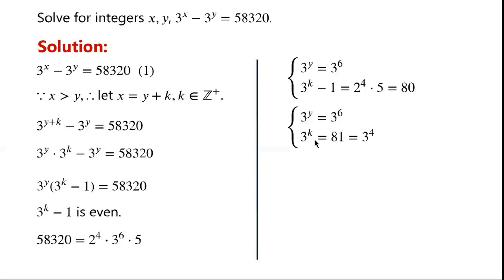So 3 to the power of k equals 81, which can be written as 3 to the power of 4. So y equals 6, k equals 4.